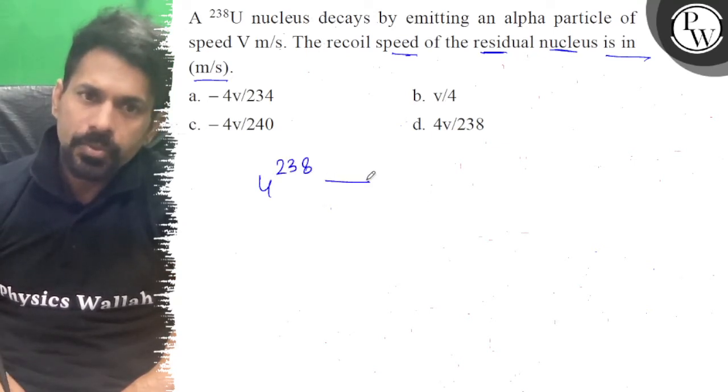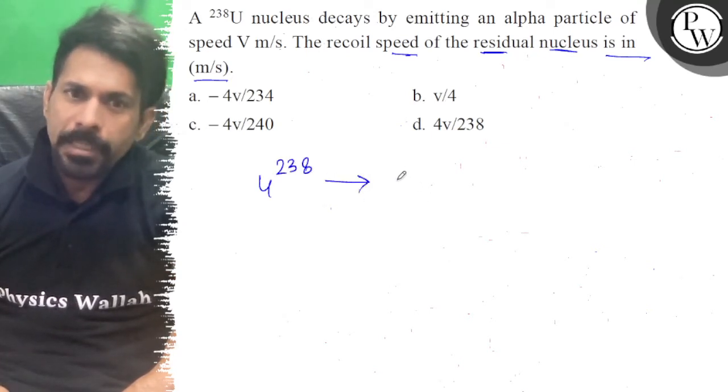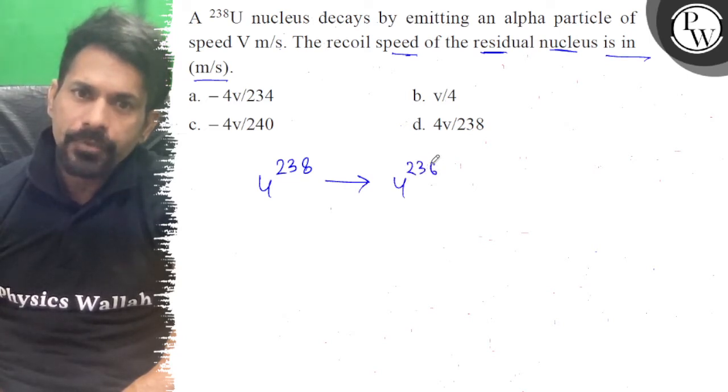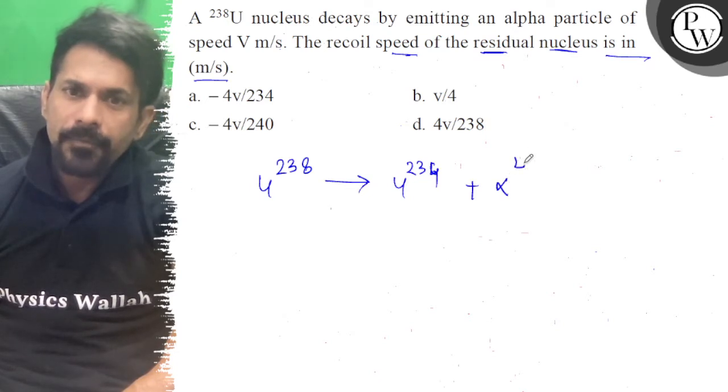Uranium-238 gives an alpha particle, U-234, and that is your alpha-4.